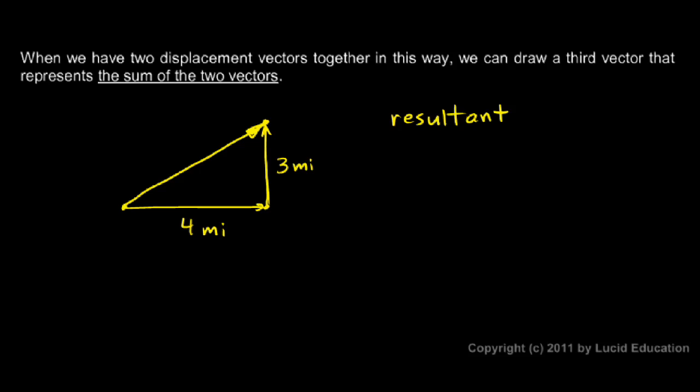Now, the other important concept to note here is that the resultant vector, let's go ahead and label it. Let's call it R for resultant. The resultant vector is equivalent to the original two vectors together. In other words, if I hike four miles to the east and then hike three miles north, the end result, getting me to this point, the end result is the same as if I had hiked this far in this direction. So the resultant by itself would be equivalent to the two original vectors added together.